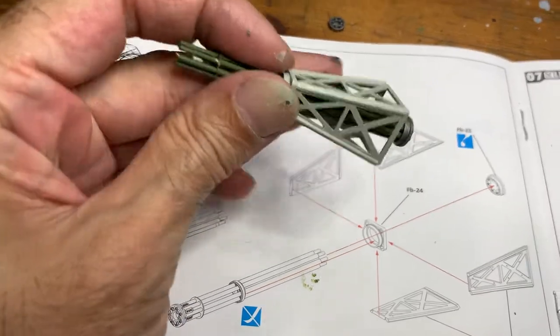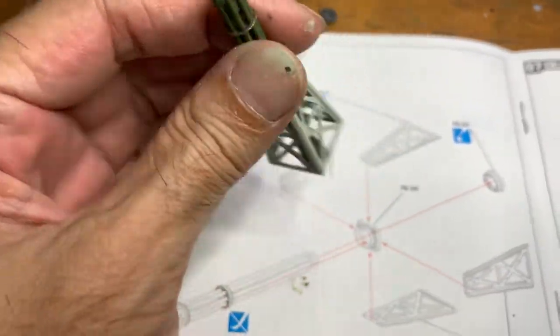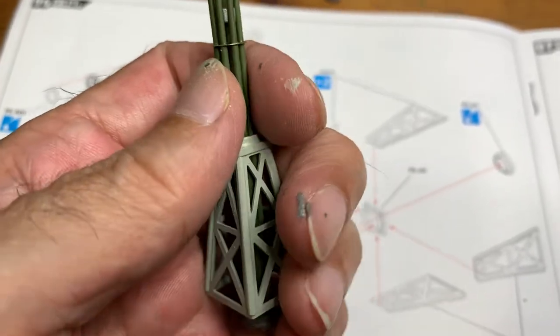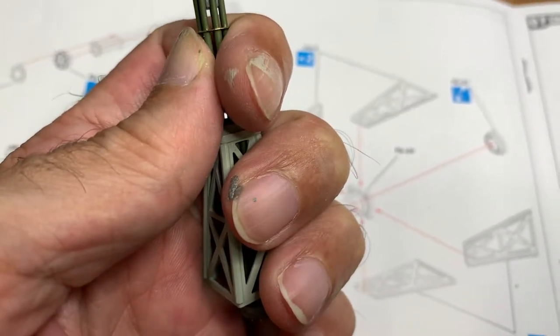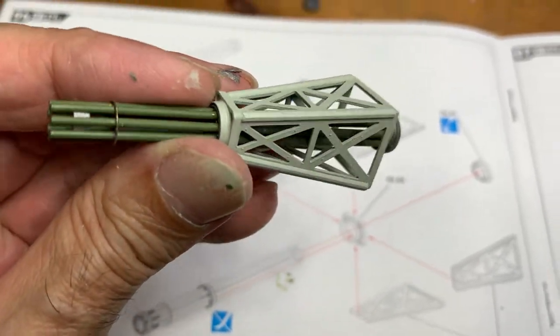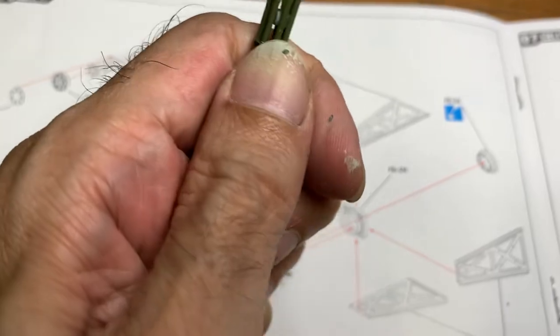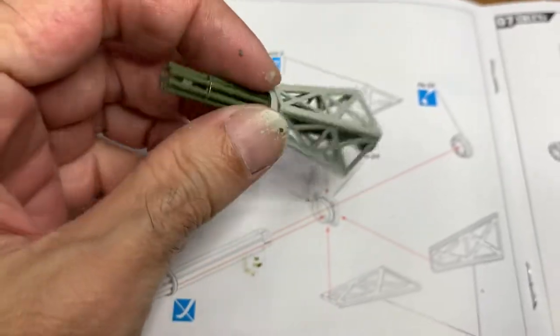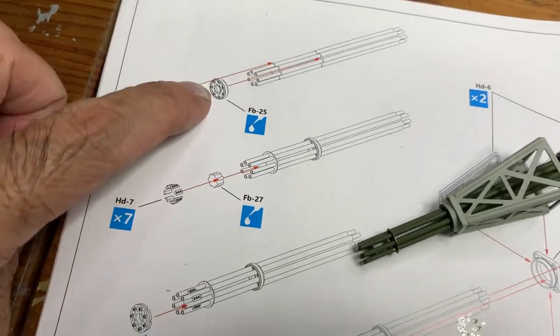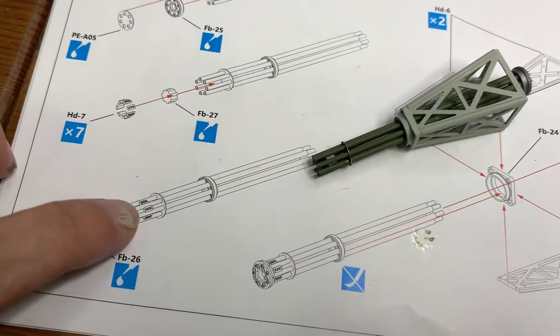I think the reason why it didn't fit is because I've painted this quite thick, so it probably got thicker. But you can actually just drill holes onto that to fit it in.